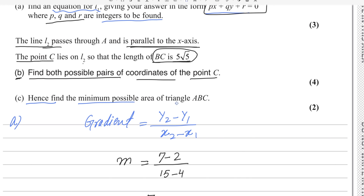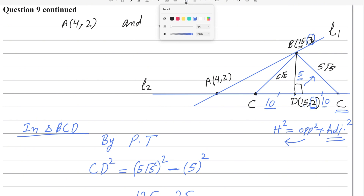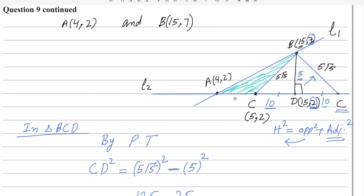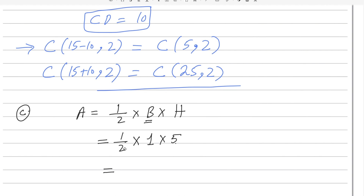For the last part, we find the minimum possible area of triangle ABC. The two possible triangles are: a small one using C = (5, 2) and a larger one using C = (25, 2). For the minimum area, we use the left-side C = (5, 2). Point A is at x = 4, so the base AC along L2 is 5 minus 4 = 1. The height from B to L2 is 5. Area = ½ × base × height = ½ × 1 × 5 = 2.5 square units.